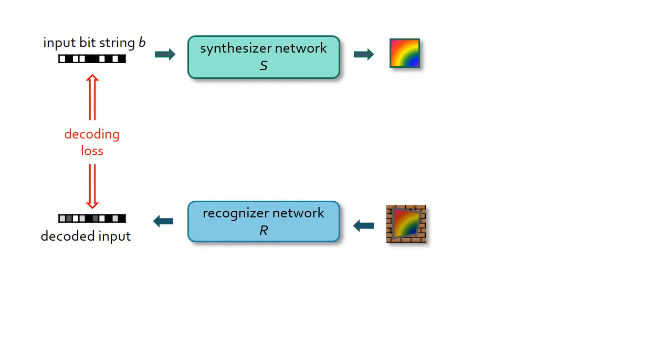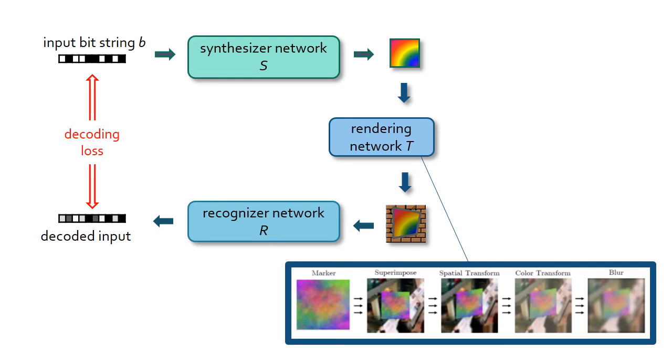To simulate the effects associated with printing and taking a photograph, we introduce a rendering network. This network sequentially applies several kinds of transformations to the marker prior to submitting it to the recognizer network.